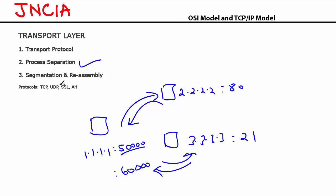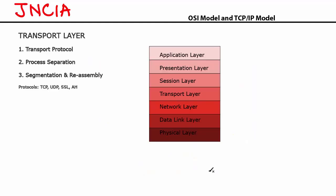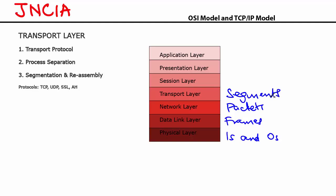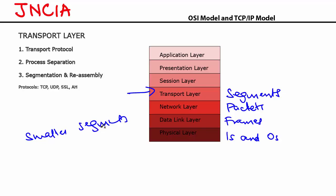Segmentation and reassembly is the third function of the transport layer. The physical layer had ones and zeros, which became frames at the data link layer, then packets at the network layer. When packets move to the transport layer, they get converted into what is known as segments. This is similar to fragmentation at the network layer — the transport layer breaks data into smaller segments, which are reassembled at the receiving end. Protocols at the transport layer include TCP, UDP, SSL (Secure Sockets Layer), and authentication header.